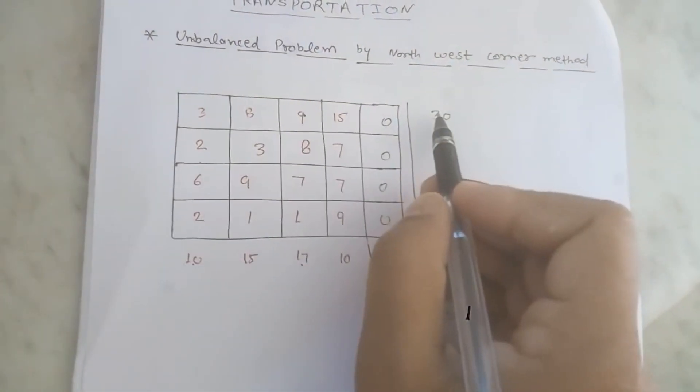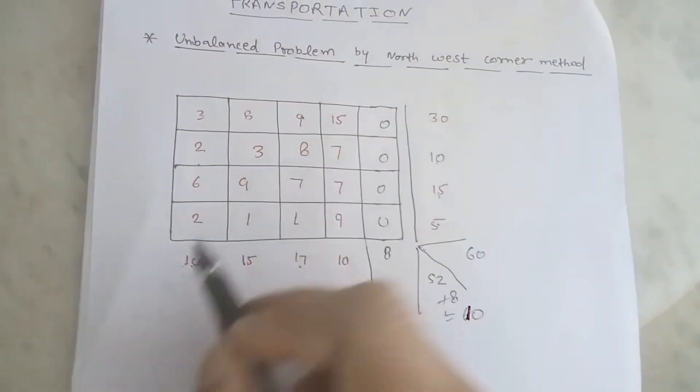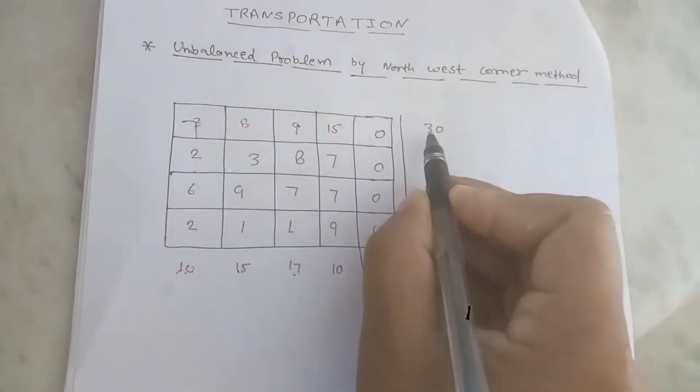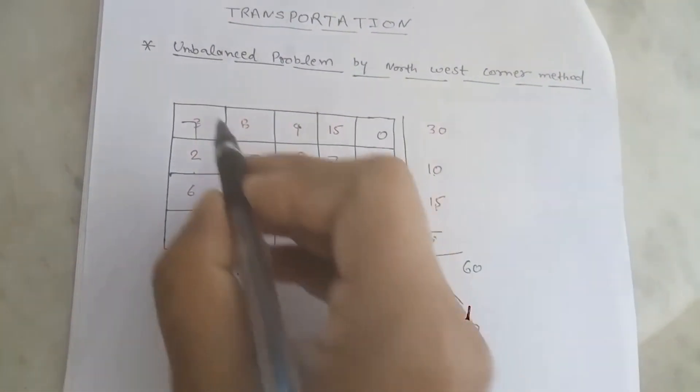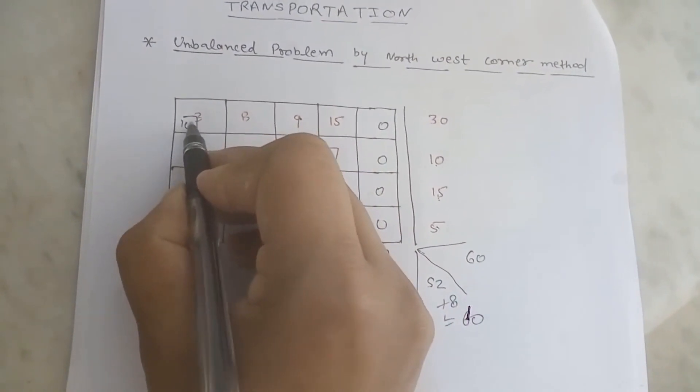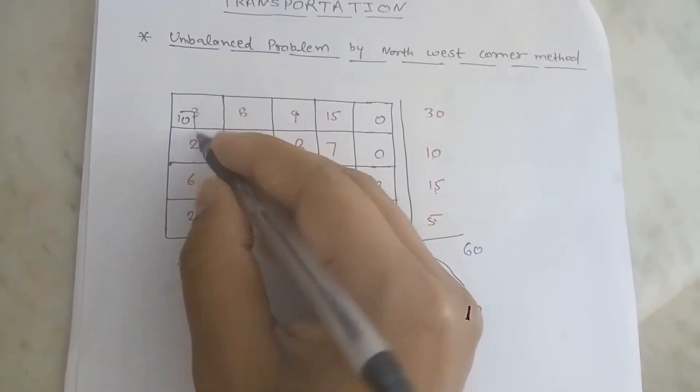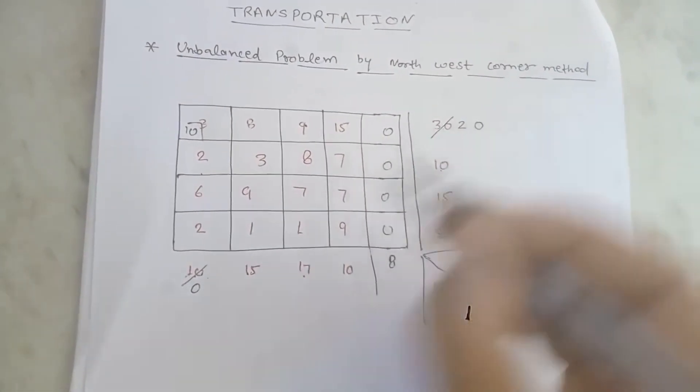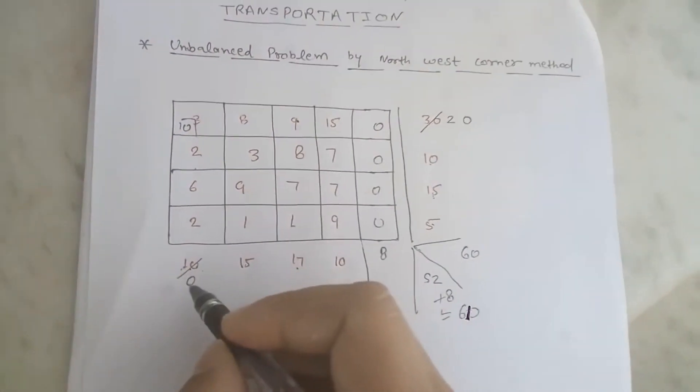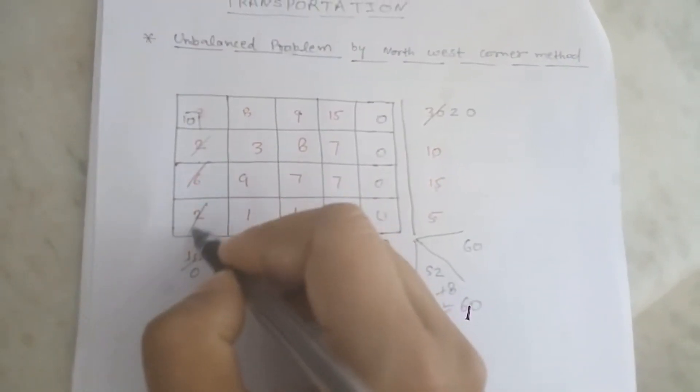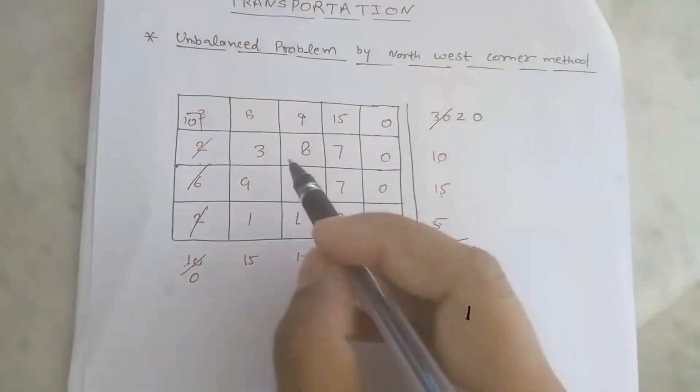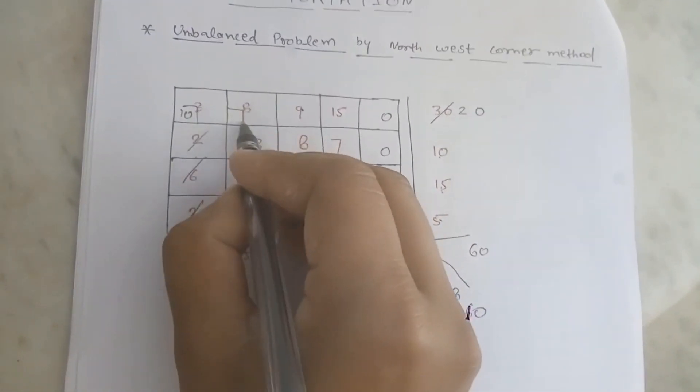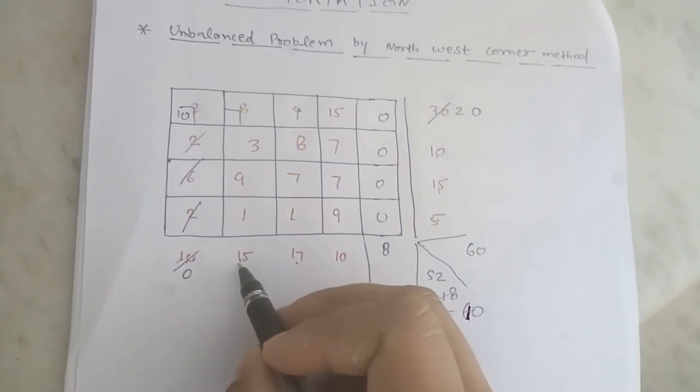Now, as in the northwest corner method, the ai value or bj value, whichever is small. Here 10 is small, so first bj number plot is 10. Now we are going to cancel and allocate the balance all over here. We are going to balance the columns and allocate the numbers.